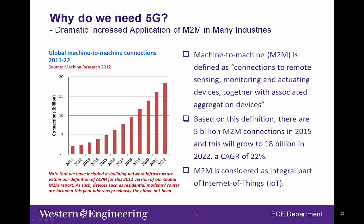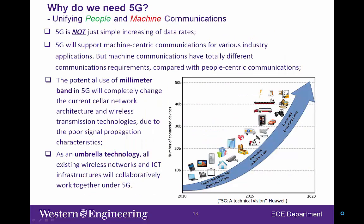As shown in the plot on this slide, an annual growth rate of 21% is predicted for machine-to-machine communications in the next few years. We can see from all this market analysis that 5G is not just a simple increase of data rates. With the ongoing integration of ICT technologies with conventional industries, one key aspect of 5G is to support machine-centric communications.